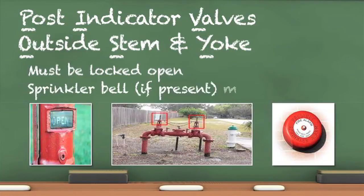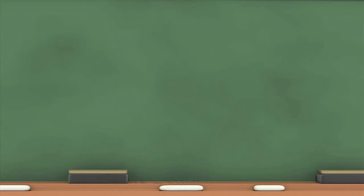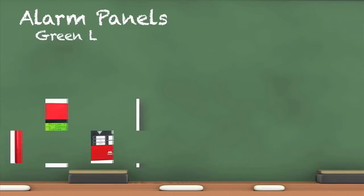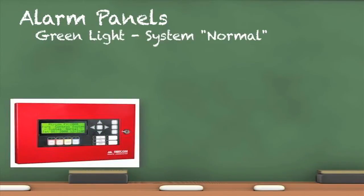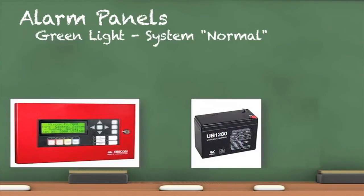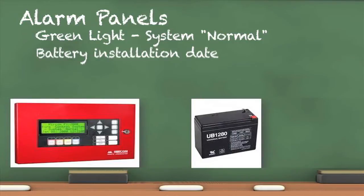Fire alarm and sprinkler bells must be clearly labeled with instructions to call the fire department when the bell rings. On the interior of the building, check the alarm panel. All the lights should indicate the system is functioning normally. Some alarm panels have a display that provides detailed information about the system's status. Alarm panels are required to have backup power. When the backup power is provided by batteries, the installation date must be indicated directly on the battery.